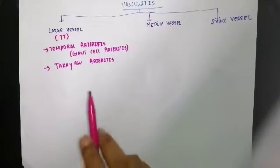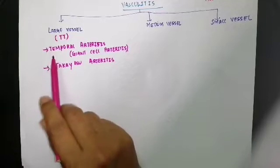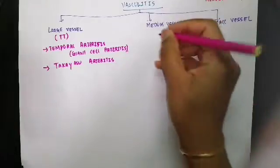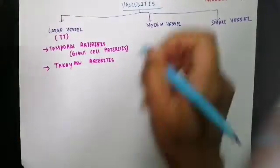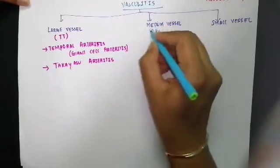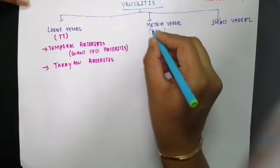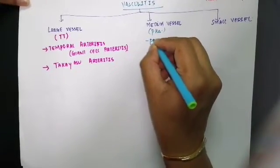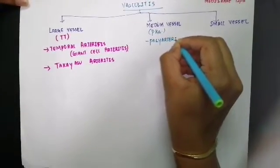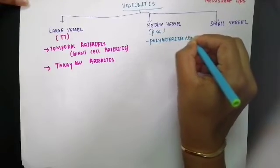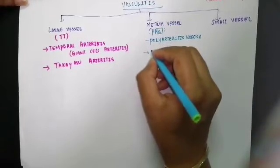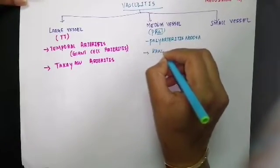For medium vessel vasculitis, use the mnemonic 'PK'. P stands for Polyarteritis nodosa, and K stands for Kawasaki disease. Both Polyarteritis nodosa and Kawasaki disease are medium vessel vasculitides.